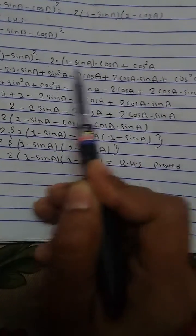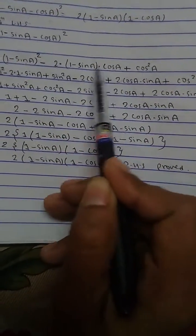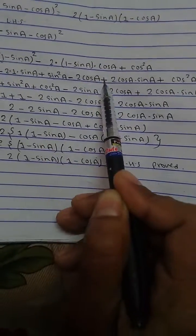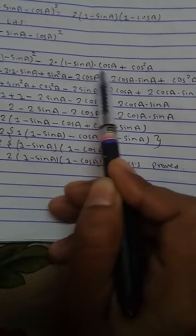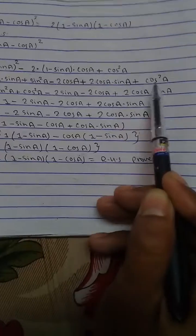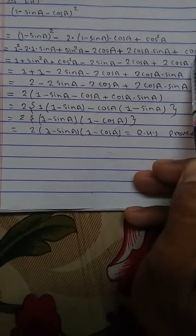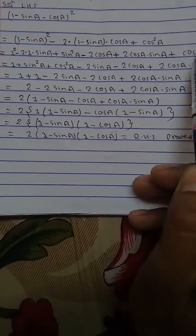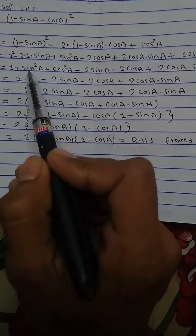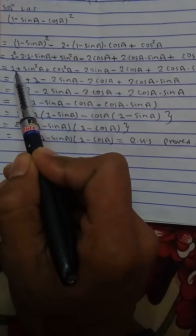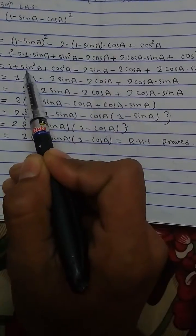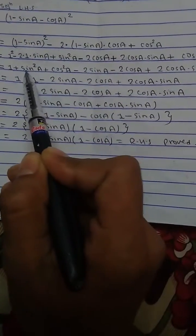Multiplying by 2 cos A, we get 2 cos A into 1, which is 2 cos A, minus 2 cos A into sin A, giving 2 cos A sin A, plus cos squared A. In the next step, 1 squared becomes 1 and sin squared remains as it is.